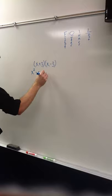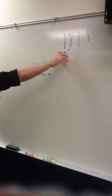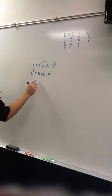So, right here, you see that these are complete opposites, so you don't even have to worry about that. You can just skip to the first and then the last. So, you get x squared minus 9, and that would be your answer.